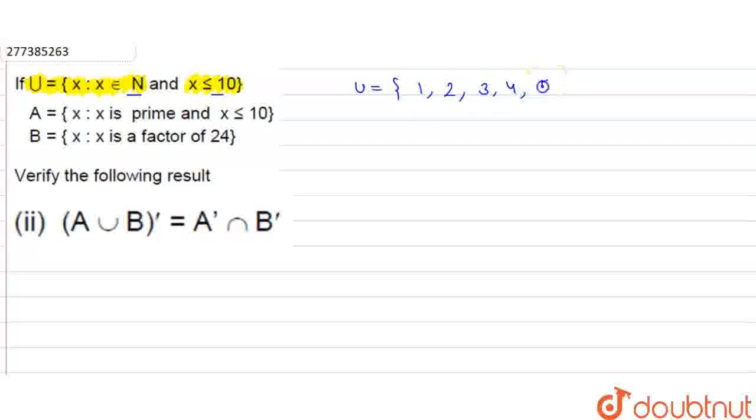So we have a universal set of elements: 1, 2, 3, 4, 5, 6, 7, 8, 9, 10. This is our universal set.